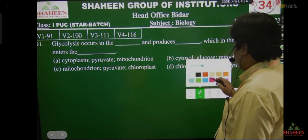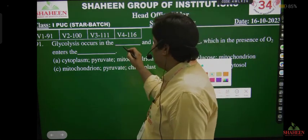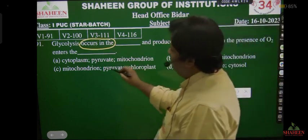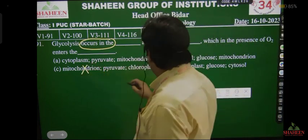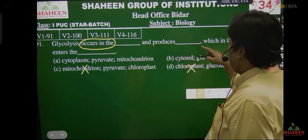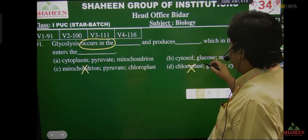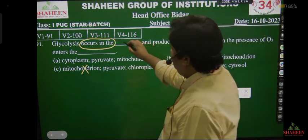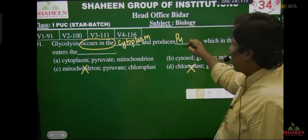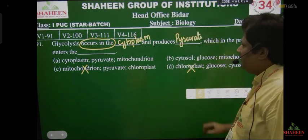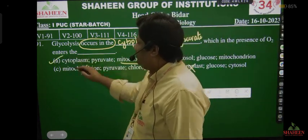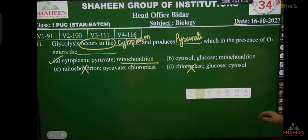First question: glycolysis occurs in — so mitochondria का option हटा दीजिए, glycolysis mitochondria में नहीं होगा, chloroplast में भी नहीं होगा. So the options that remain are cytoplasm/cytosol and it produces pyruvate. Glycolysis occurs in cytoplasm. It produces pyruvate, a three-carbon compound, which enters into mitochondria. So correct answer is first option.